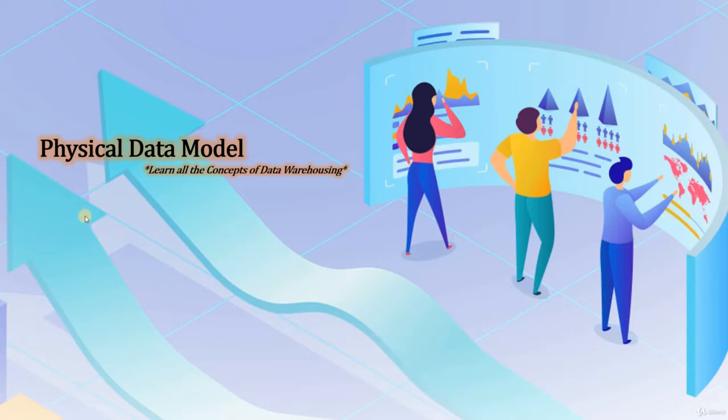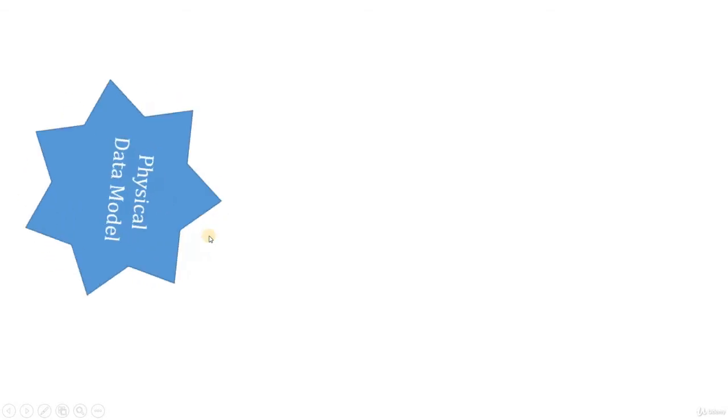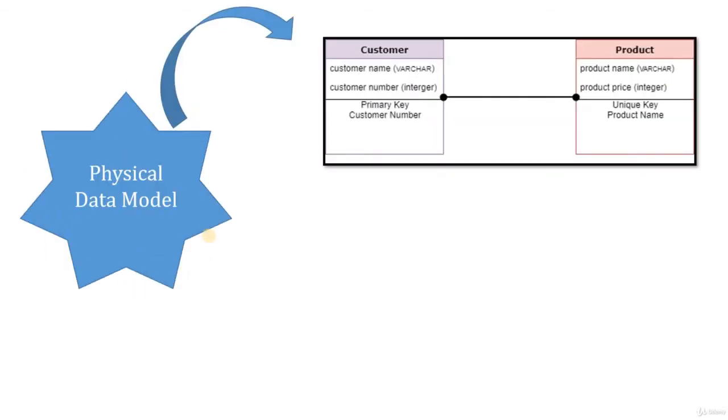So let's move on to see how exactly the Physical Data Model would look like. As you can see in this table, we have already defined customer and product as the two entities.